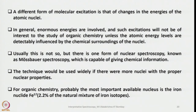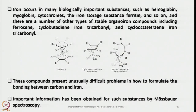A different form of molecular excitation involves changes in the energies of atomic nuclei. Enormous energies are generally involved and such excitations are not of interest to organic chemistry unless the atomic energy levels are detectably influenced by the chemical surroundings of the nuclei. There is one form of nuclear spectroscopy — Mössbauer spectroscopy — capable of giving chemical information. For organic chemistry, the most important nucleus is iron-57; iron occurs in many biologically important substances such as hemoglobin, myoglobin, cytochromes, and iron storage substances such as ferritin.